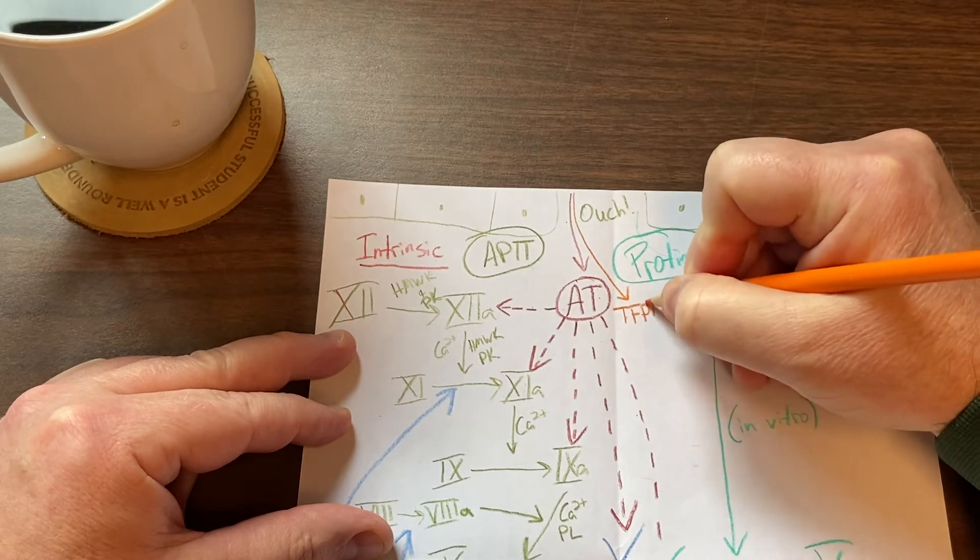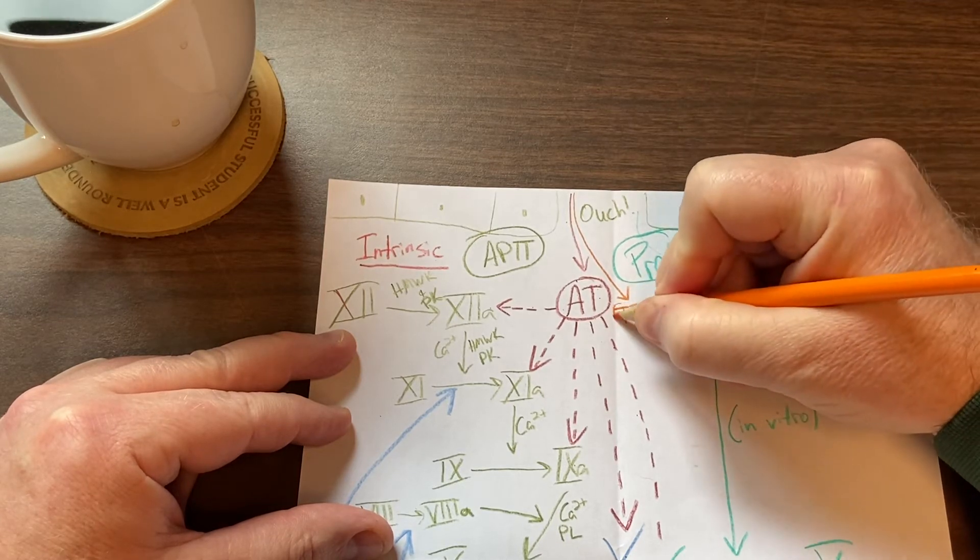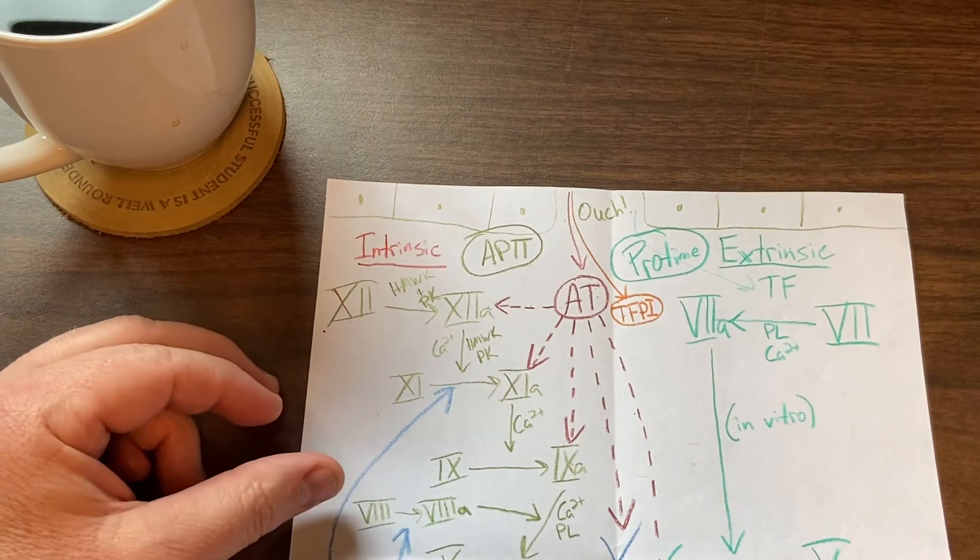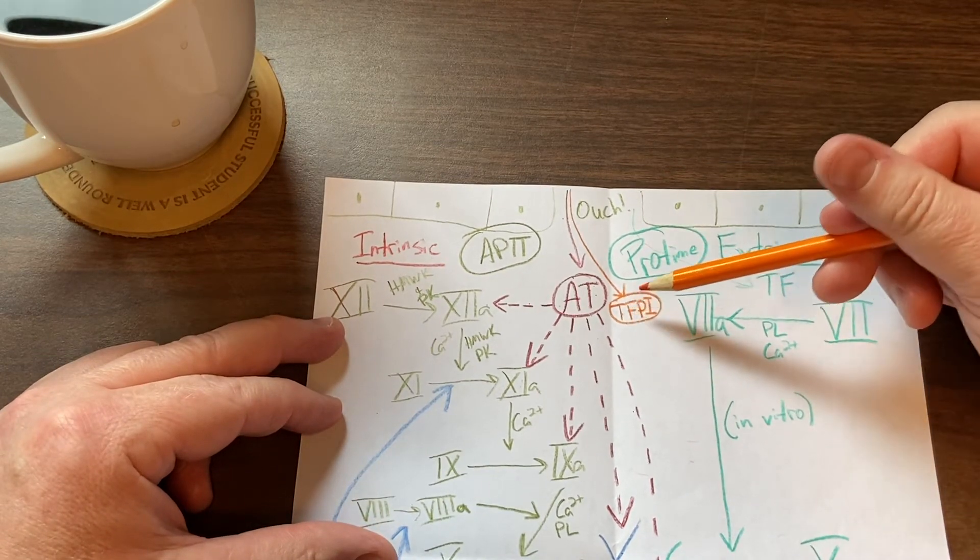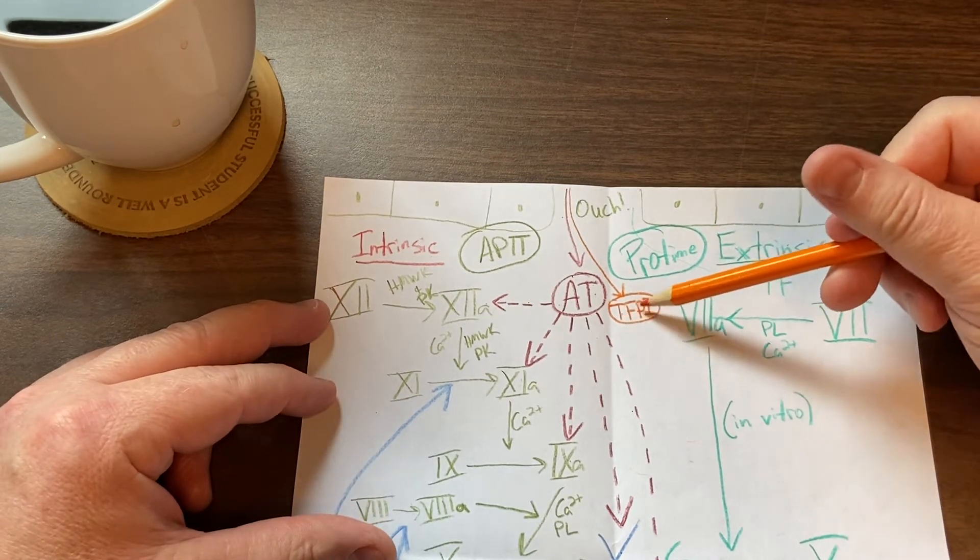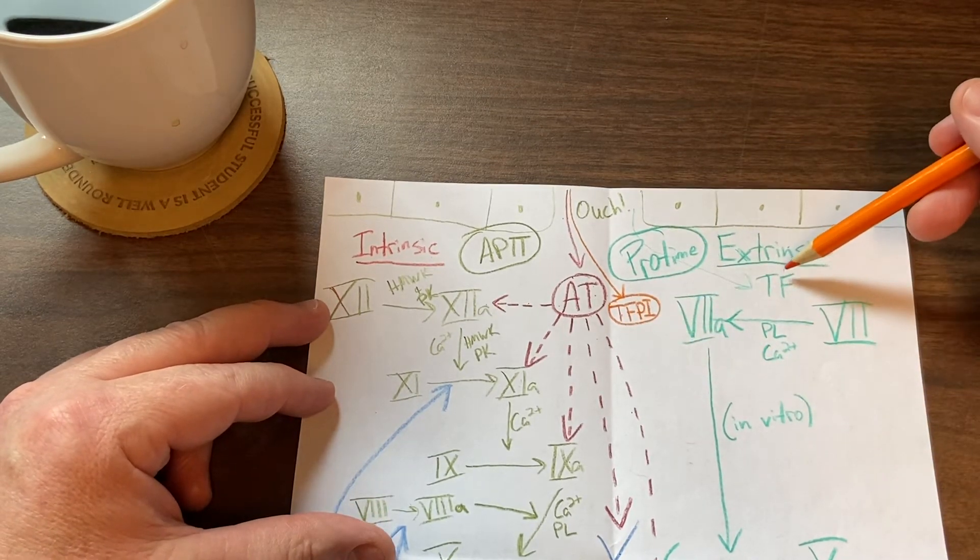We'll circle it so that it's easier to see for you. And what do you suppose tissue factor pathway inhibitor does? Well, it inhibits the tissue factor pathway, and this is the tissue factor pathway, the extrinsic pathway.